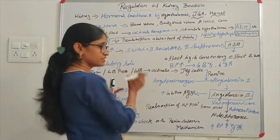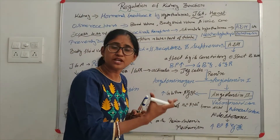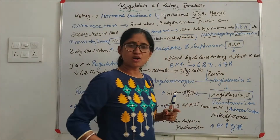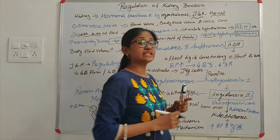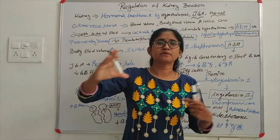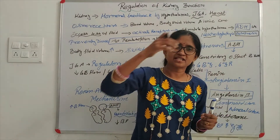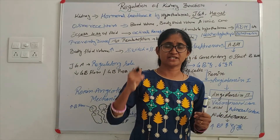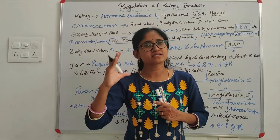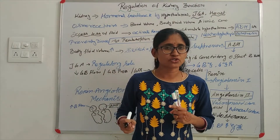So to recap: the osmoreceptors are activated and stimulate the hypothalamus to release ADH. ADH is vasopressin. What caused this? Excess fluid loss. If the amount of fluid going out is too much, what will be done? Reabsorb it — in which part? The distal portion — the distal convoluted tubule. So ADH causes water absorption from the distal part.